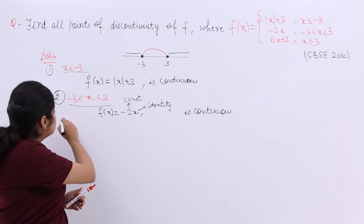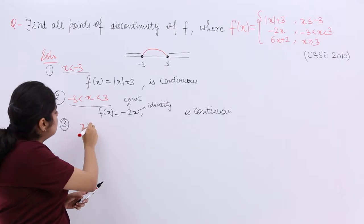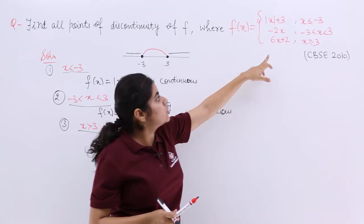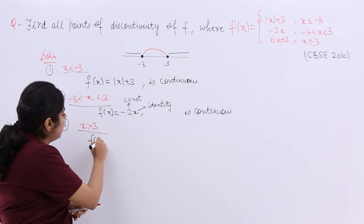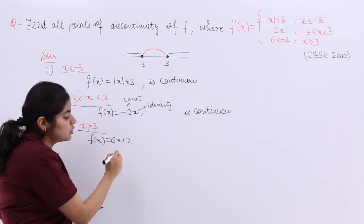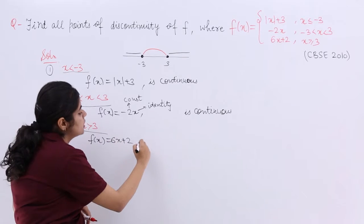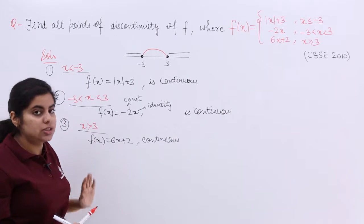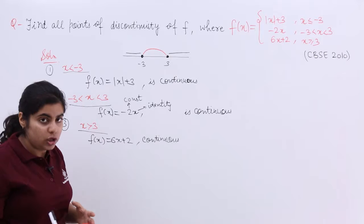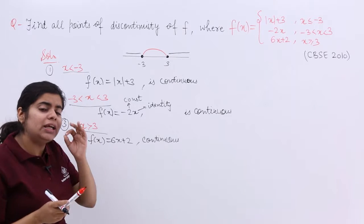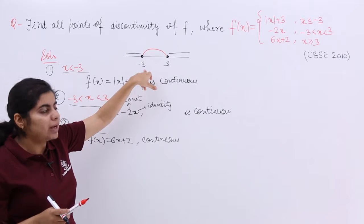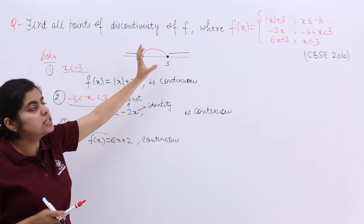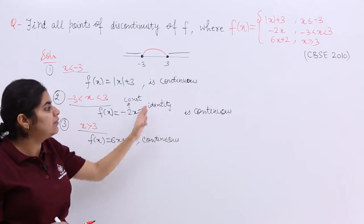The third region is x ≥ 3, where f(x) = 6x+2. This is a polynomial function, and polynomial functions are always continuous. So there is no discontinuity in these three regions. If discontinuity exists at all, it can only exist at the boundary points x = -3 or x = 3.